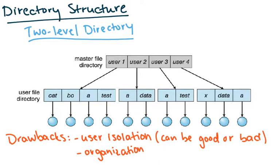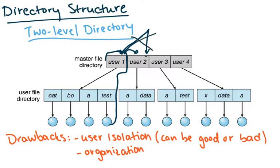Some drawbacks of the two-level directory: you have user isolation, which can be good and bad. These users cannot actually go into another user's directory — as soon as they boot into the system, they're in their own subtree. You can't cd back up and go into somebody else's directory, so this functionality is not there. It could be bad if you ever want to share files. Organization is also a little better than single-level, but you still don't have a nested subfolder structure — you only have two levels.